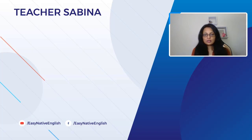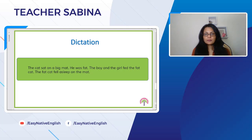Here is what you should have written: 'The cat sat on a big mat. He was fat. The boy and the girl fed the fat cat. The fat cat fell asleep on the mat.' — with capital letters at the beginning of each sentence, full stops at the end, giving you four sentences in total.